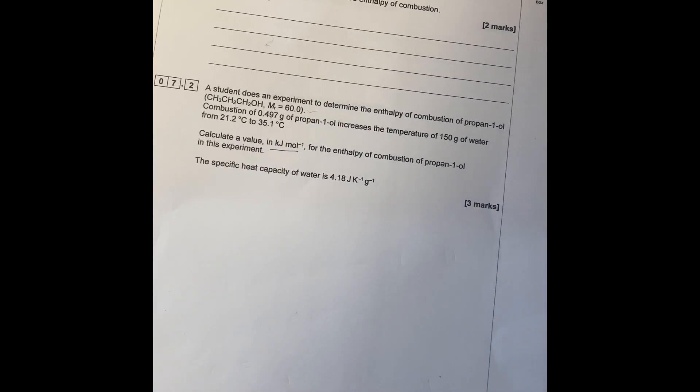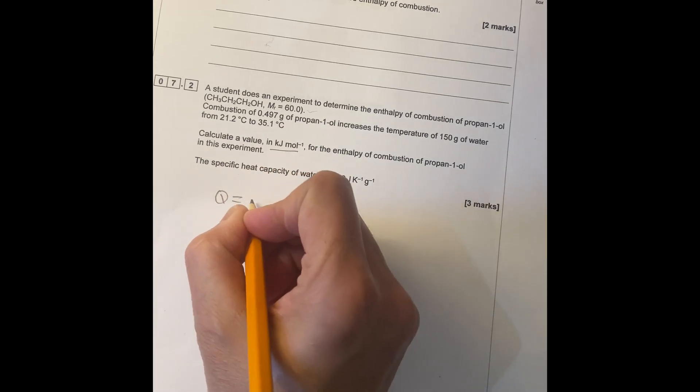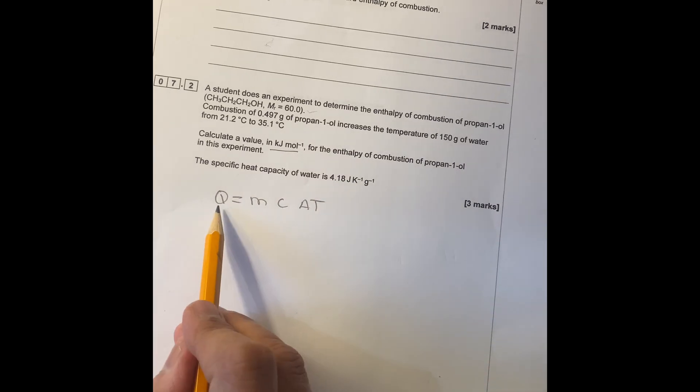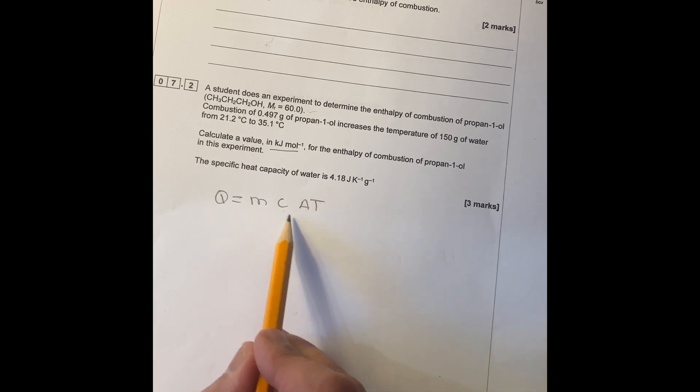When you have this question, the first thing you do is you need to know this formula: Q equals MC delta T. Q is heat exchanged, M is the mass of water, C is specific heat capacity, and delta T is the change of temperature.